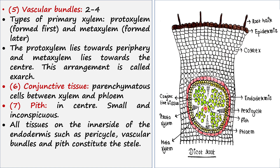The pith is the central part of the dicot root, and it is very small and inconspicuous — meaning it is not very distinct. All tissues on the inner side of the endodermis — the pericycle, vascular bundles, conjunctive tissue, and pith — together make up the stele. This is all about today's lecture; I hope you understood the session.